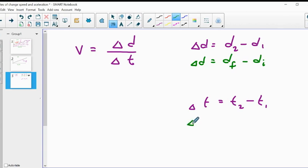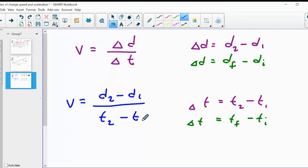Likewise, for the time, the change in time is T2 take away T1. Or it is the final time take away the initial time. So what we can do is we can write our velocity formula in terms of our distances and our times. D2 subtract D1 divided by T2 subtract T1.